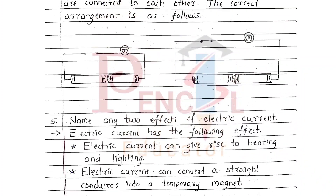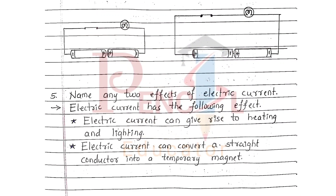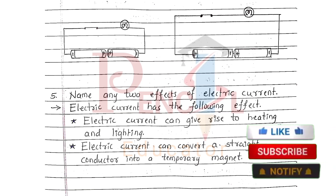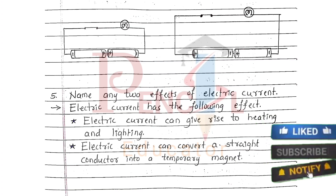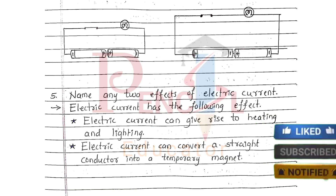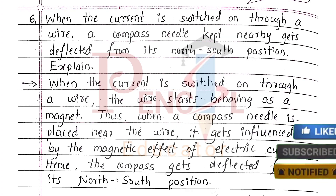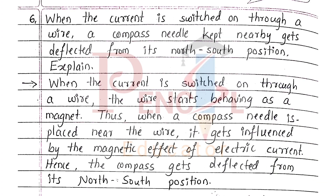Fifth question, name any two effects of electric current. Electric current has the following effects: electric current can give rise to heating and lighting, and electric current can convert a straight conductor into a temporary magnet.